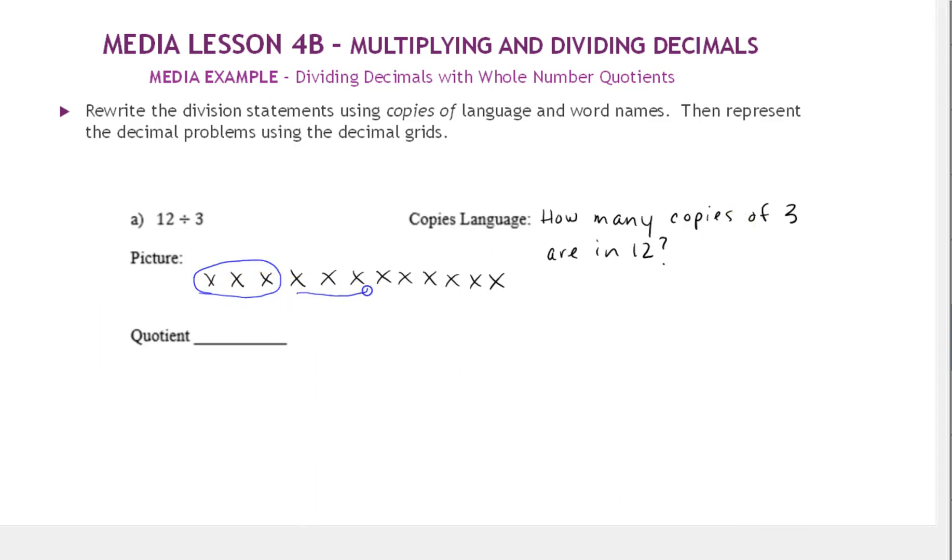So here's one copy of 3, two copies, three copies, four copies. So 12 divided by 3 is 4.